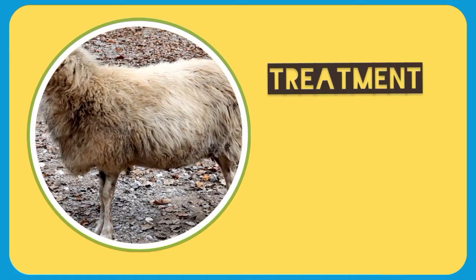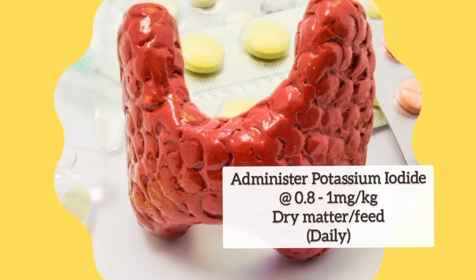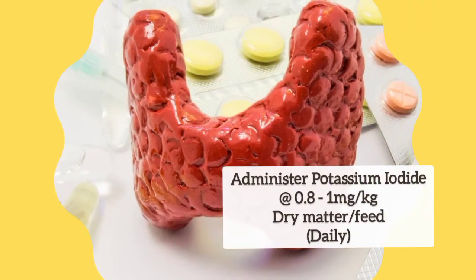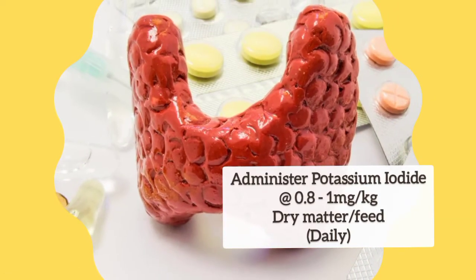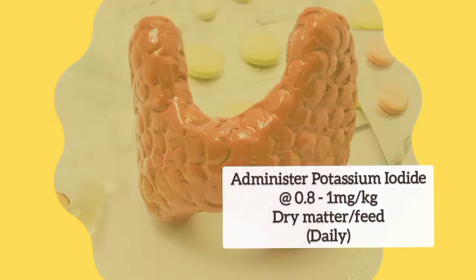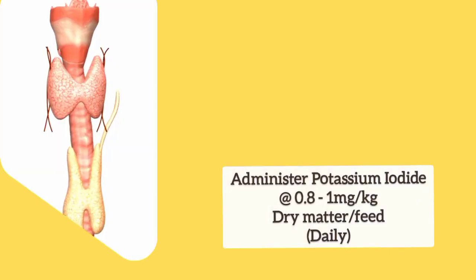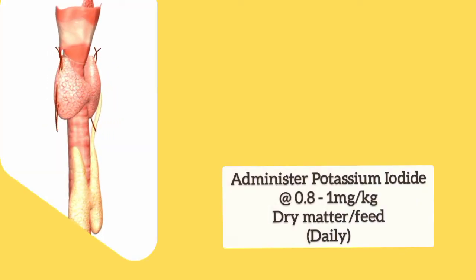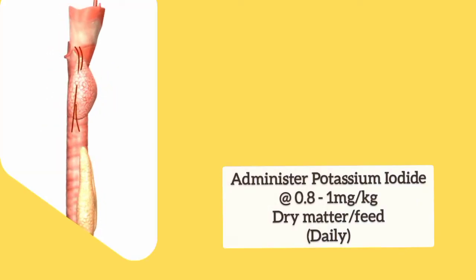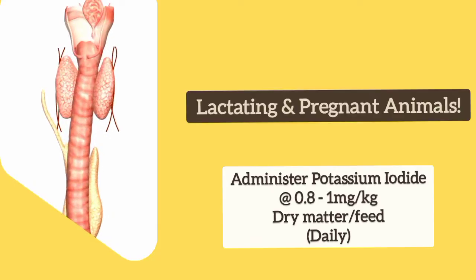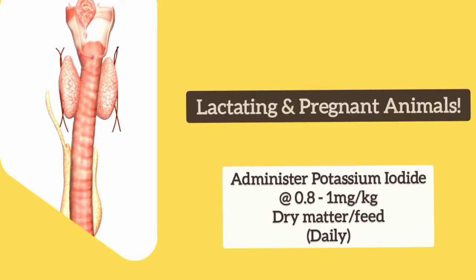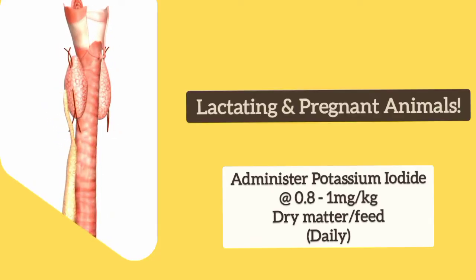The treatment approach includes administering potassium iodide at 0.8 to 1 milligram per kilogram dry matter per feed as daily intake in lactating and pregnant cattle.